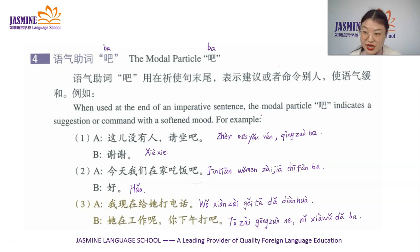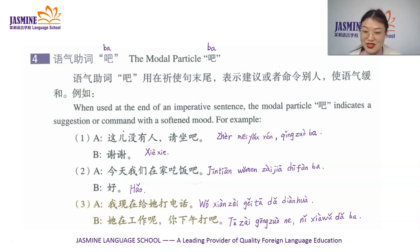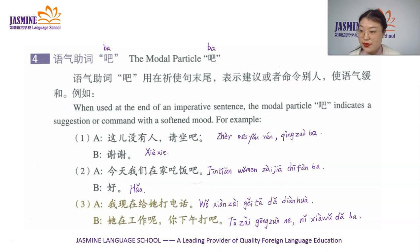For example: 这儿没有人，请坐吧。谢谢。 这儿 means 'here,' 没有 means 'don't have' or 'there are not,' 人 means 'person' or 'people.' So 这儿没有人 means 'Nobody is here.' 请坐吧 means 'Please sit down.'